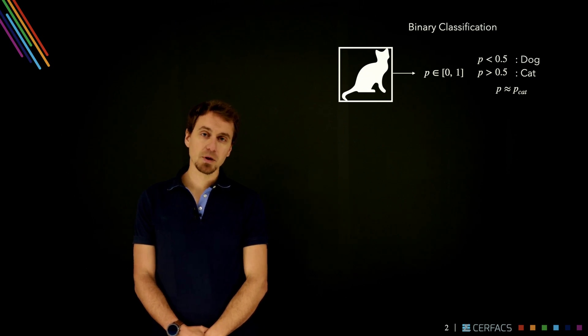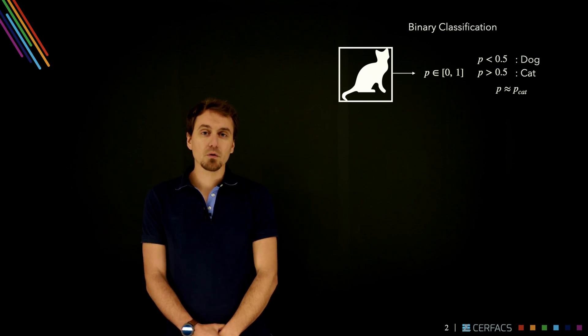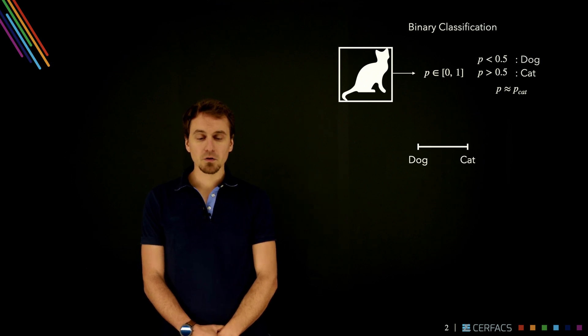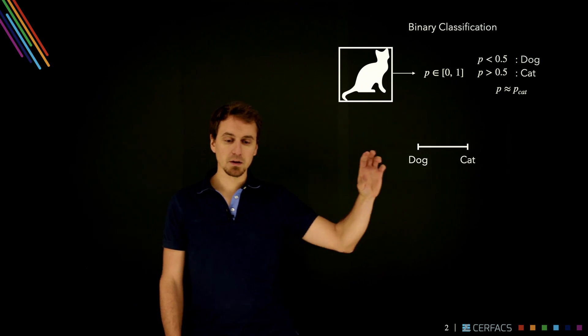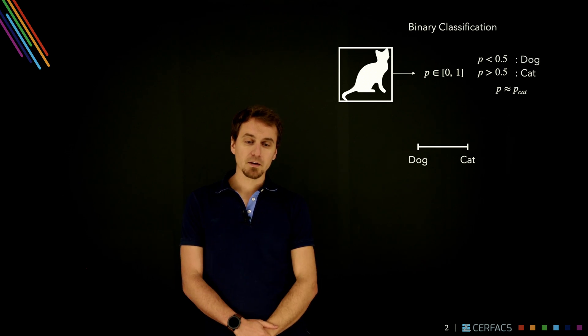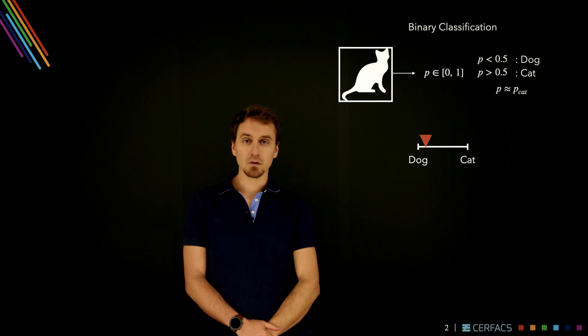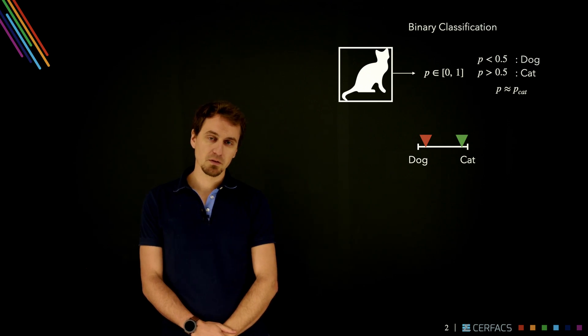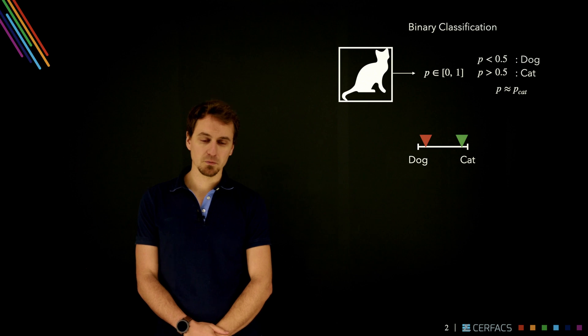In essence this means that p is simply the probability that the output is a cat, and p is a probability between 0 and 1. You can draw it out on a linear scale that goes from 0 dog to 1 cat. If you predict for this image something on the lower part that will be false, but if you predict anything above 0.5 then you will be correct.